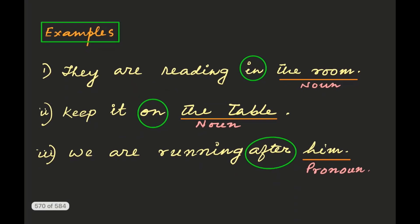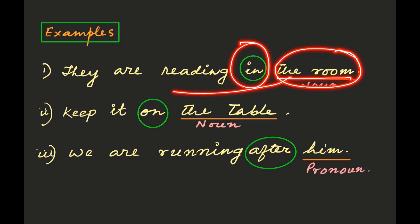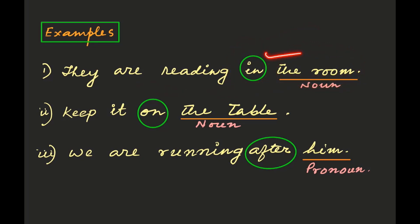Now see the examples. First: 'They are reading in the room.' Second: 'Keep it on the table.' Third: 'We are running after him.' In the definition it is said that a preposition is used before a noun or pronoun. Here, 'in' is used before the noun 'the room' to connect this noun with the rest of the sentence, so it's a preposition. In 'Keep it on the table,' 'on' is used before the noun 'table.'